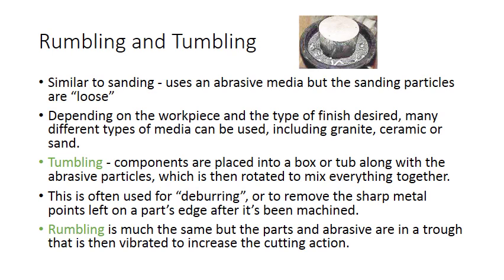Rumbling and tumbling is something used a lot in jewelry making — it's similar to sanding but the abrasive media particles are loose. You put your piece into something like a bowl of sand, and depending on the type of surface finish you want, you can use different media such as granite, ceramics, or sand. In tumbling, components are placed into a box or tub along with abrasive particles and the whole thing is rotated — like a washing machine — so the abrasive particles deburr and remove sharp metal points left on a part's edge after machining.